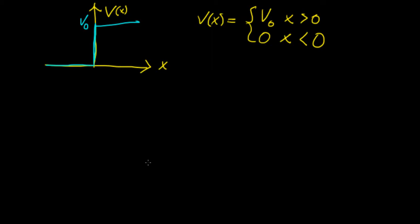Now we're finally ready to tackle the problem of the potential step. We formulate this problem by imagining a potential that has a value of 0 for x less than 0, and then once it hits the origin, the potential is stepped up abruptly to V0. V0 is a finite constant value, and it is the value of the potential for x greater than 0, extending to infinity on both sides.